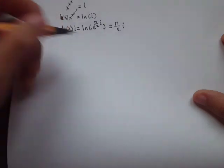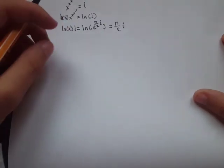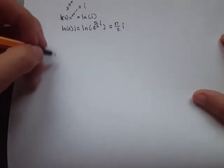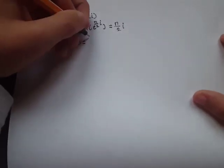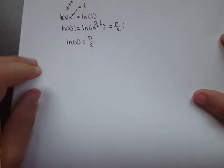Now the inverse operation of natural log is e, so we'll raise e to the power of both sides.